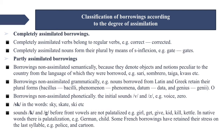Classification of borrowings according to the degree of assimilation distinguishes three groups: completely assimilated borrowings, partly assimilated borrowings, and non-assimilated borrowings. Completely assimilated borrowings are words not felt as foreign in the language, such as the French-origin word 'sport'. Completely assimilated verbs belong to the regular verbs, for example 'correct', 'corrected'. Completely assimilated nouns form their plural by means of s-inflection, like 'gate', 'gates'. Semantic assimilation depends on words existing in the borrowing language — as a rule, a borrowed polysemantic word does not bring all its meanings, for instance the Russian borrowing 'sputnik' is used in English in only one of its meanings.